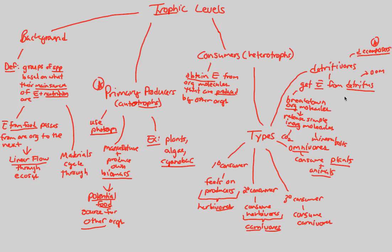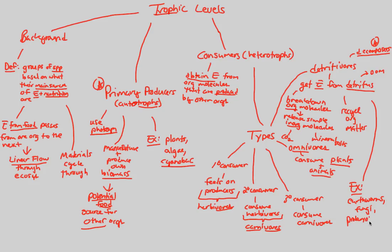Detritivores also recycle organic matter — recycling is a critical part of ecosystem ecology. Examples include earthworms, which are critical organisms in every land environment; fungi, which are huge players in the decomposing world; and prokaryotes — many bacteria that we cannot see are heavily involved in decomposition. These are all critical detritivores within our trophic levels.